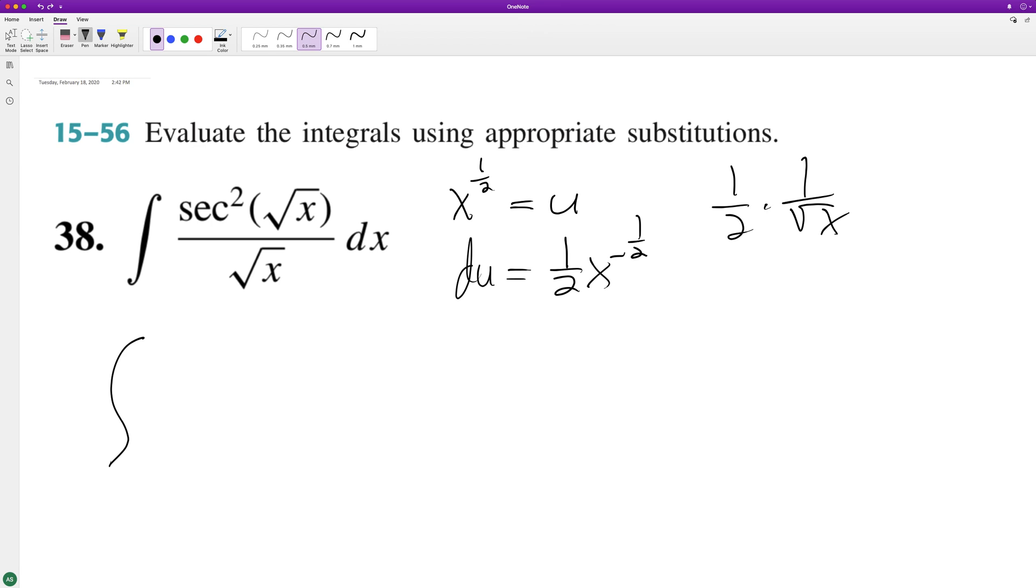To get dx equal to du, we have to multiply du by two to get it equal to dx. So we'll have two secant, this ends up being secant squared u du.